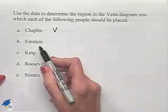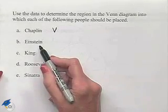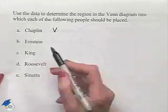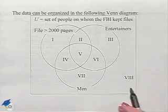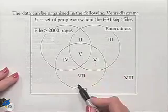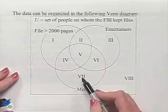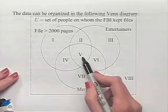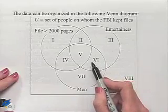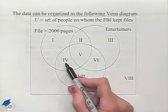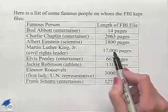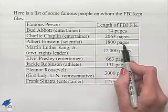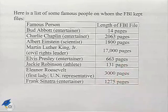The second person to consider is Albert Einstein. Einstein was a scientist and he was a man. He would be in the circle for men, but we still have a number of different regions to decide upon. We know he's not an entertainer, so we can eliminate those two regions. We just need to figure out how long his file was. Albert Einstein had a file of 1,800 pages.